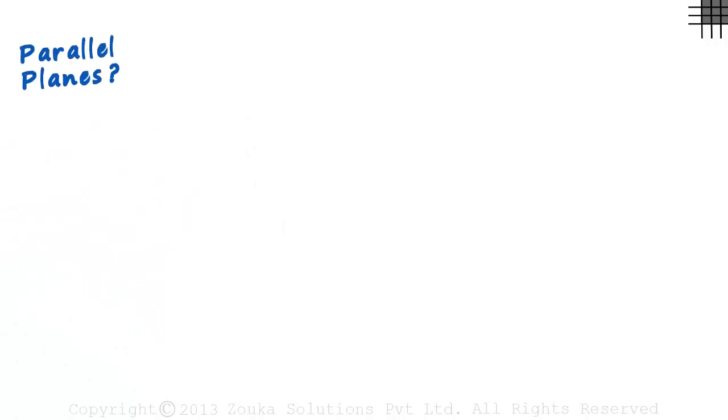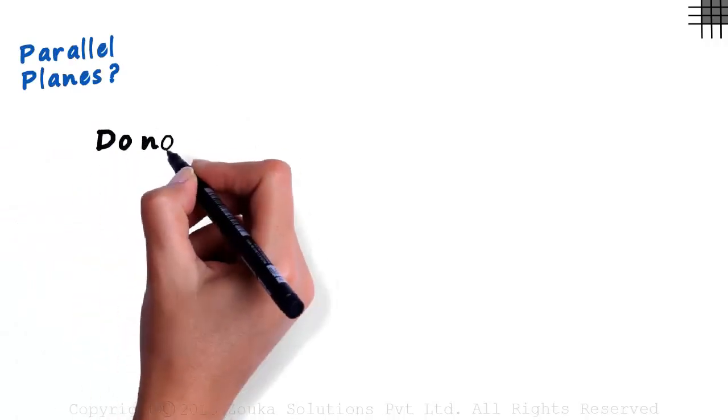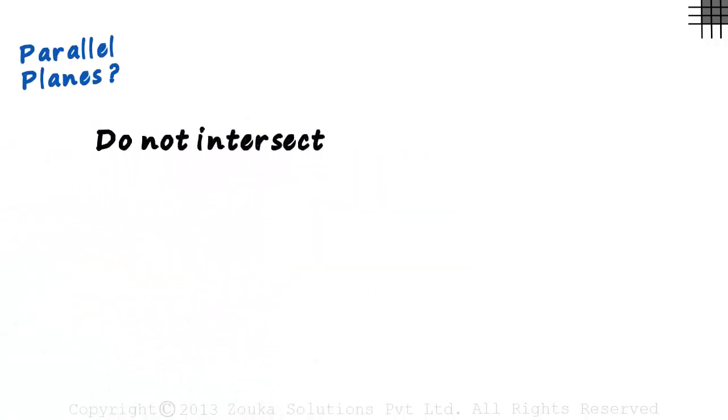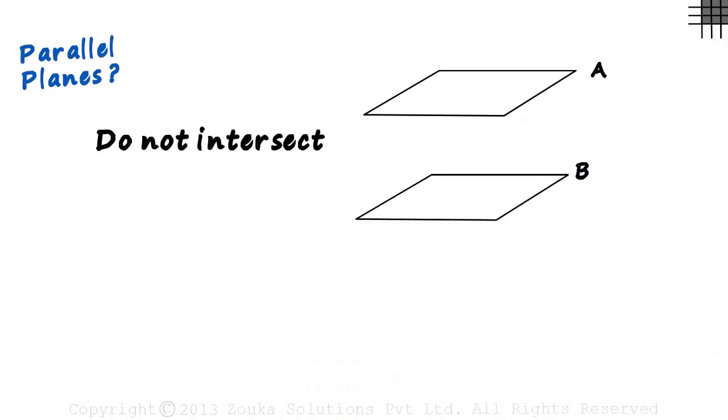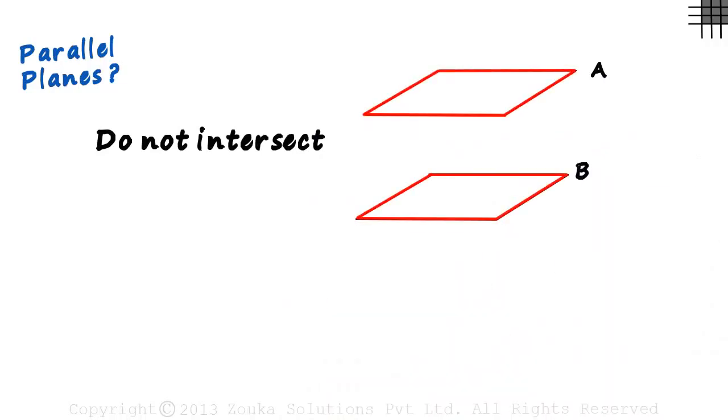But what are parallel planes? It's simple. They are planes which do not intersect. If we have plane A and plane B which do not intersect, they are called parallel planes.